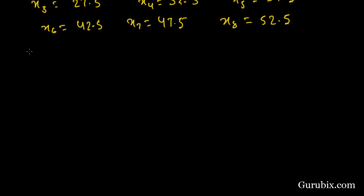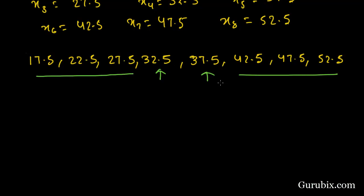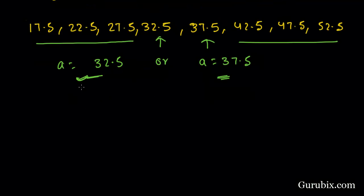Now we have to find A, the assumed mean, which is the middle term of Xi. Our Xi values are 17.5, 22.5, 27.5, 32.5, 37.5, 42.5, 47.5, and 52.5. The middle terms of this series are 32.5 and 37.5, so A is equal to 32.5 or A is equal to 37.5 — it is our choice. Let's choose A equal to 32.5.